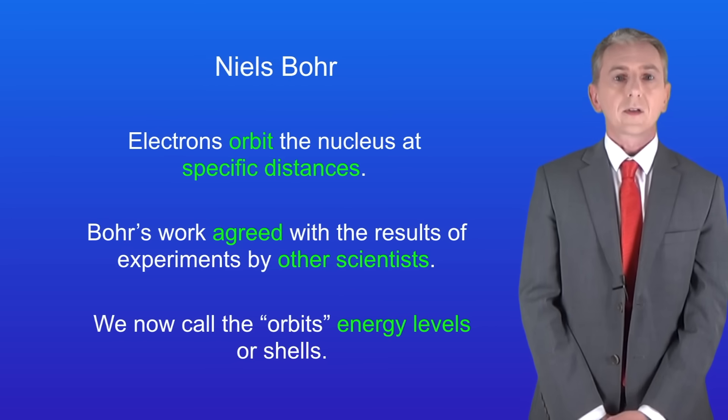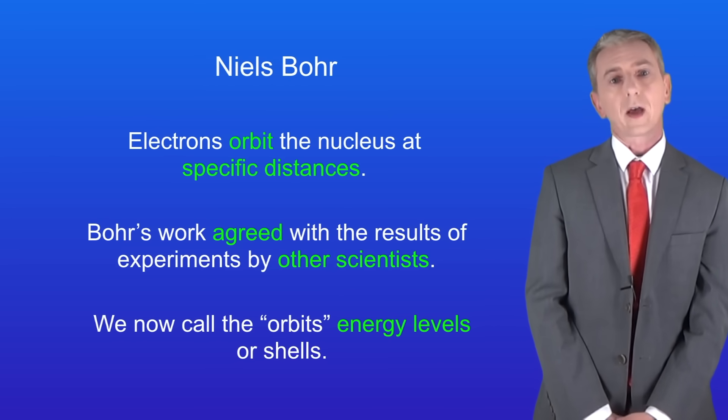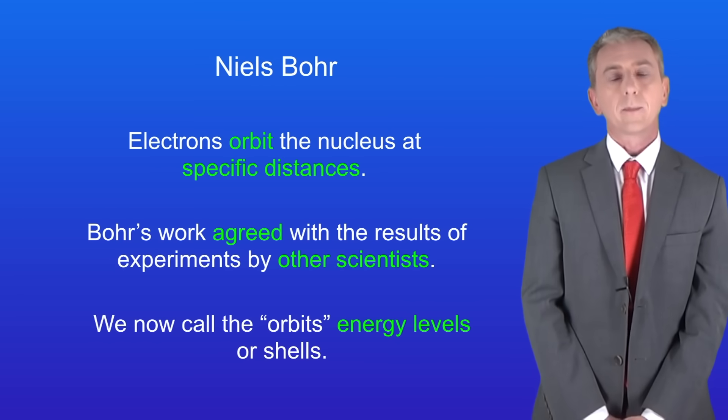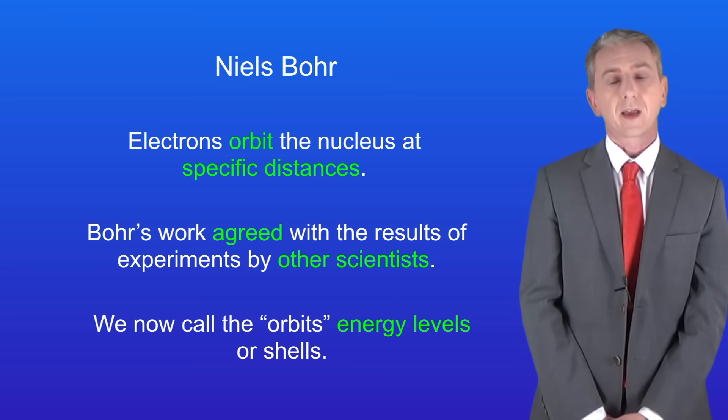Now the scientist Niels Bohr proposed that electrons orbit the nucleus at specific distances rather than just in a general area. Bohr's proposal was accepted because it agreed with the results of experiments by other scientists.